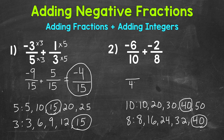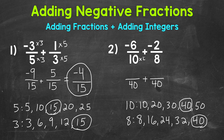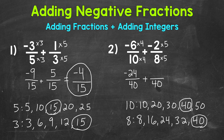Let's rewrite these fractions using our least common denominator of 40. For negative six tenths: 10 times 4 is 40, so we multiply the numerator by 4 as well — negative six times four is negative 24. For negative two eighths: eight times five is 40, so negative two times five is negative 10. Now we have both fractions renamed with a denominator of 40.